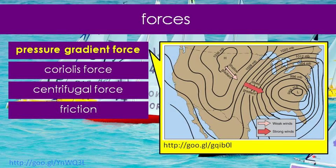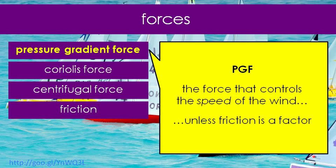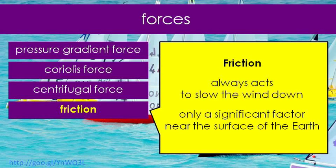In general, we like to tell atmospheric science majors that the pressure gradient force is the force that controls the speed of the wind, but that's only strictly true if friction is not a factor. If friction is a factor, then that plays in too. Friction is always acting just to slow the wind down — just like friction slows any two objects rubbing together.